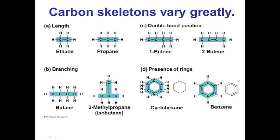These skeletons can branch, so we can have chains of carbons that are a single linear chain or we can also have branched chains. They can also vary by having double or single bonds and the position of these double bonds or even triple bonds can vary within a chain.